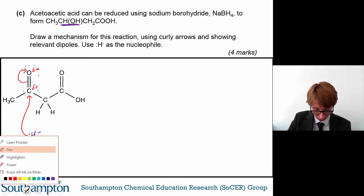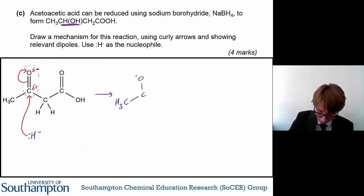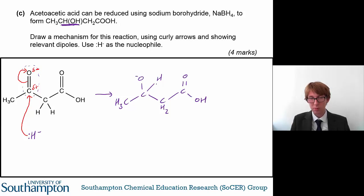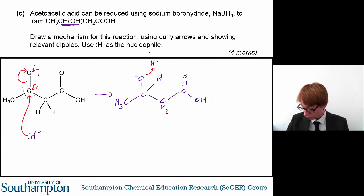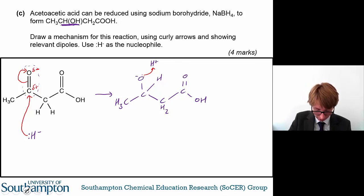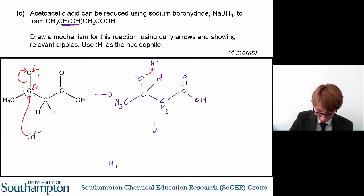In the process, the double bond between the carbon and oxygen will break, and the electrons in that bond will go to the oxygen atom. From here, you've formed this intermediate structure. Some H+ is added, and the negatively charged oxygen will grab that proton to form your new compound.